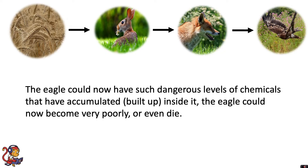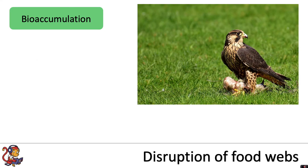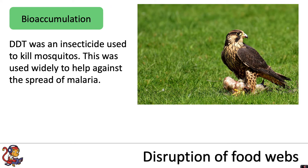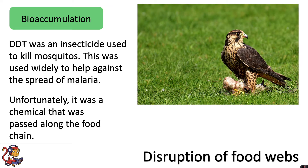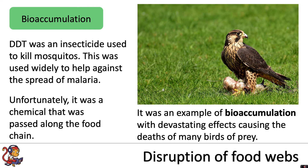The eagle will have the highest concentration of chemicals accumulated — which means built up — inside it, so the eagle could become very poorly or even die. Now we're going to look at a case study of bioaccumulation with a chemical called DDT. DDT was an insecticide used to kill mosquitoes. It was widely used to help against the spread of malaria and also as an insecticide on crop fields. Unfortunately it was a chemical that was passed along the food chain, and it is an example of bioaccumulation with devastating effects, causing the deaths of many birds of prey.